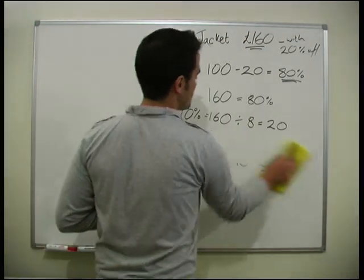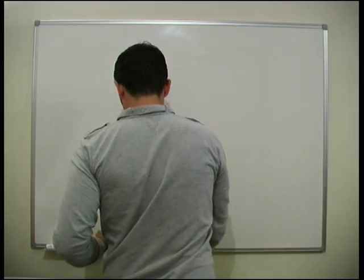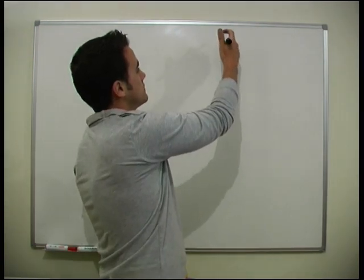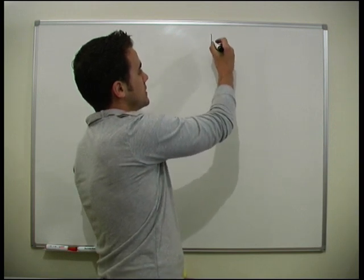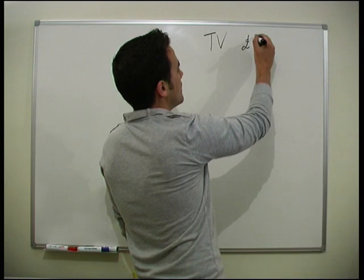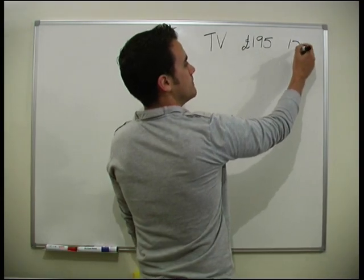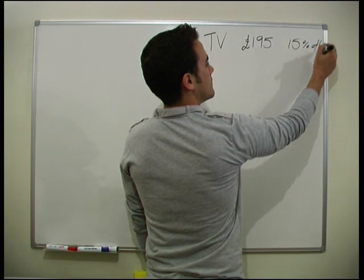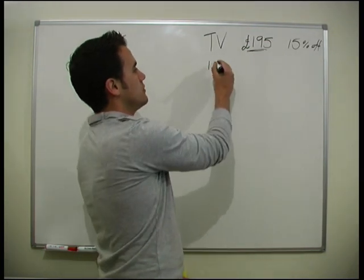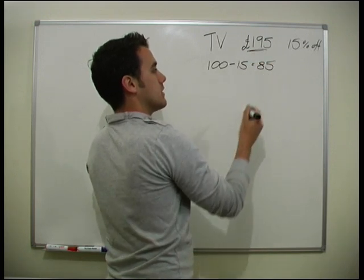It's that simple. Let's do one more example. This time I'm going to buy a TV again. The TV is on sale at £195 and that's had 15% off. So we need to work out what percentage this actually corresponds to: 100 minus 15 equals 85. So £195 represents 85%.